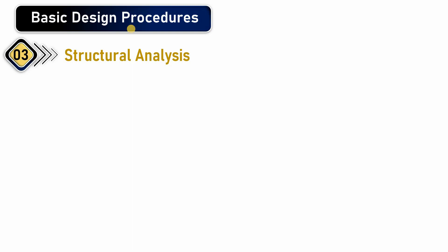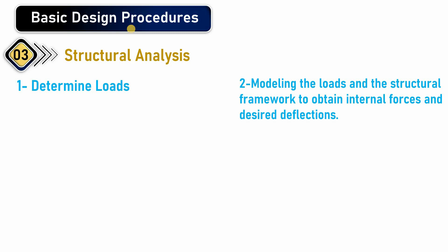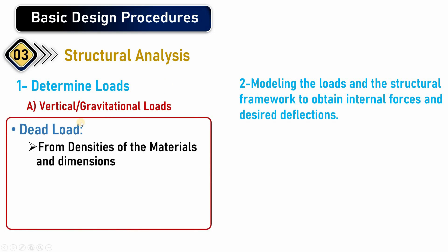In the third part — structural analysis — there are two main issues: determining the loads, and modeling those loads and the structure using appropriate software. Loads are generally categorized into vertical or gravitational loads and lateral loads. Vertical loads include dead loads, calculated using the unit weights of materials from the code, and the self-weight of structural members such as columns, beams, slabs, and staircases, which is automatically calculated by the software.